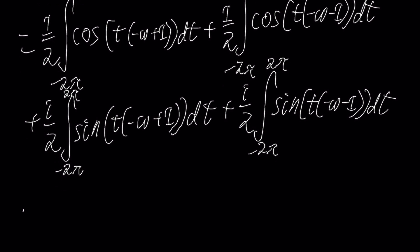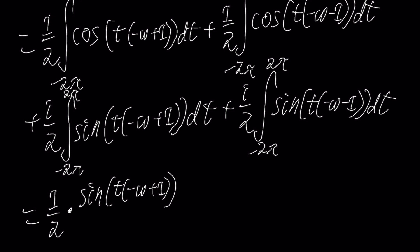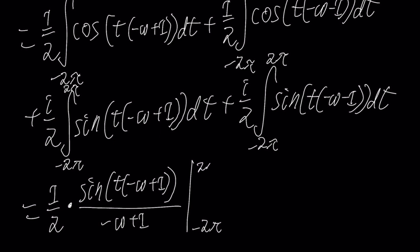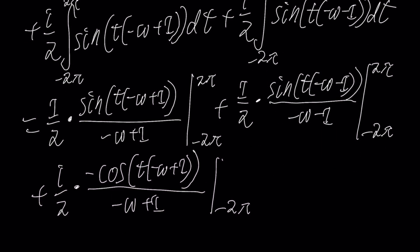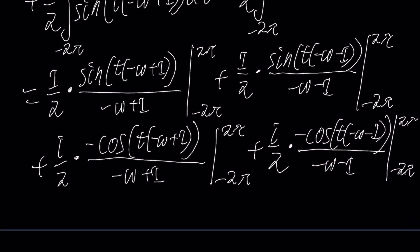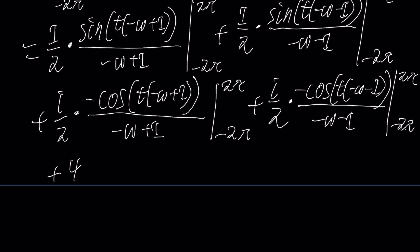This is now a really simple integral. For the first term, we'll have one half times sine of t·(1 − ω), and since we treat (1 − ω) as a constant, we divide by (1 − ω). This will be evaluated from negative 2π to 2π. Then we do the same for the other three integrals. We also add the constant of integration, though that's not really relevant in real-world applications.